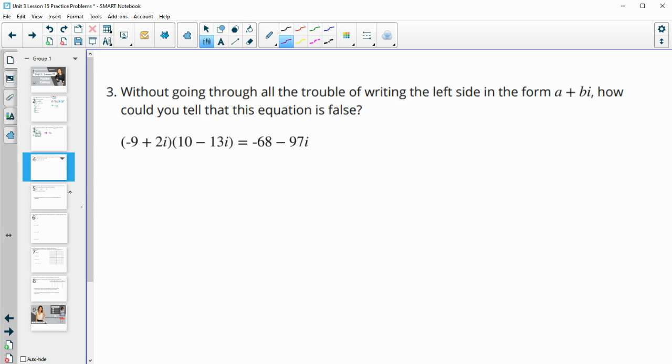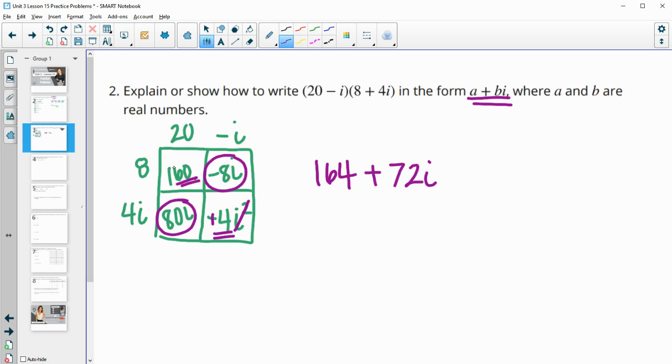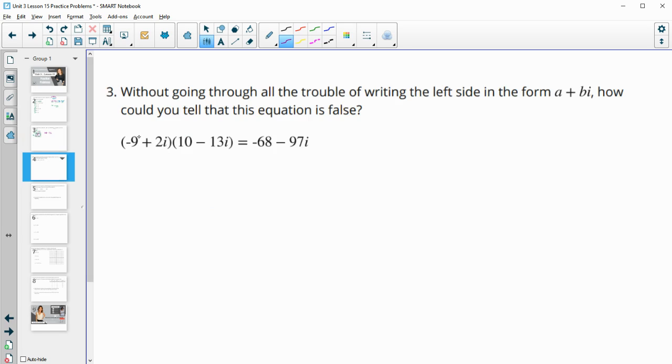Number three, without going through all of the trouble of writing this left side in this form, meaning multiplied all the way out, how could we tell that the equation is false? So we know from this screen that when we multiply out, we'll have this real number. But then this is also going to turn into a real number. These two don't change, however. So if I just looked at the i terms, negative 9 times negative 13i is a positive number, and 2i times 10 is a positive i number, and this is a negative. Well, we can't take a positive i plus a positive i and end up with a negative. So certainly something went wrong with those i terms.